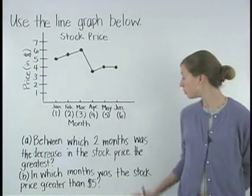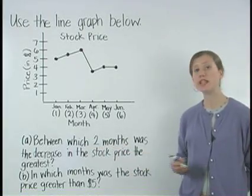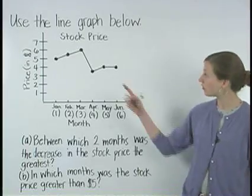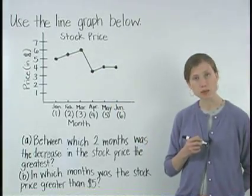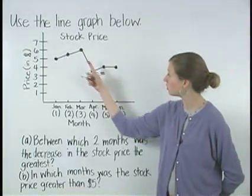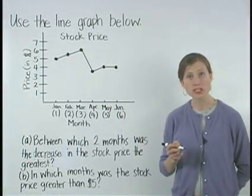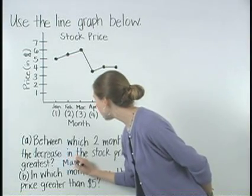To determine between which two months the decrease in the stock price was the greatest, notice that the sharpest decrease in the graph is from March to April when the stock price dropped from $6 to $3.50. So the sharpest decrease is between March and April.